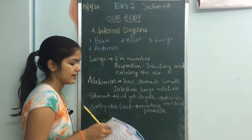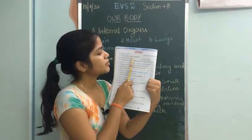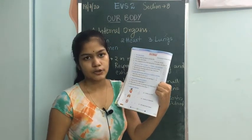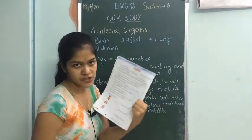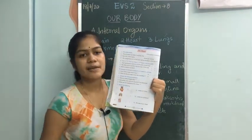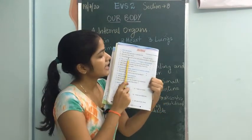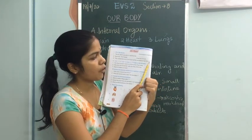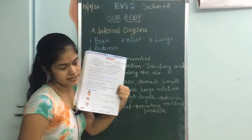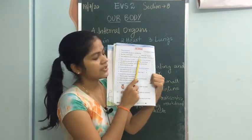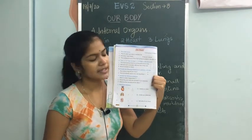Now let's do an exercise with fill-in-the-blanks. The air which we take reaches the lungs. Normally the heart beats 72 times per minute. The undigested part of the food will be excreted in the form of excretory products.